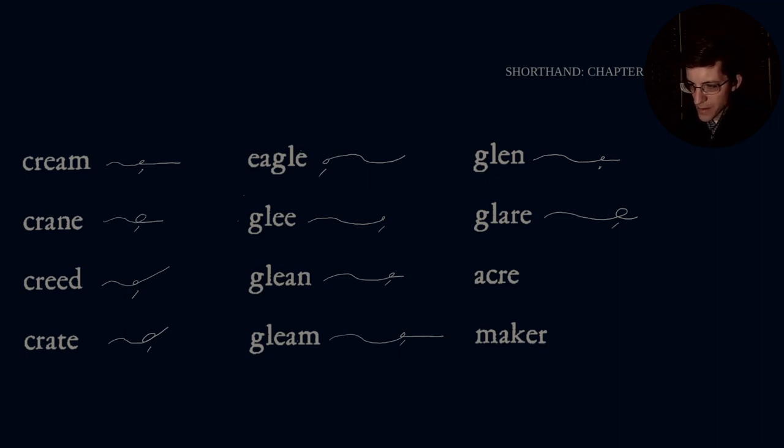Glare, G, L, E, R. And that is the long sound, so it receives that stroke. Acre. This is an interesting one. A, C, R. Acre. And then maker. Notice we can leave out the E, so K and R can just be put right together. We don't need to do a K and then an E vowel circle and then R. Very nice. So cream, crane, creed, crate, eagle, glee, glean, gleam, Glenn, glare, acre, and maker.